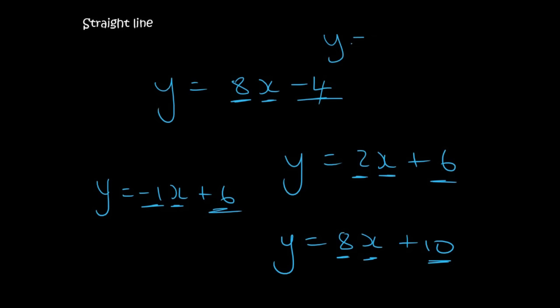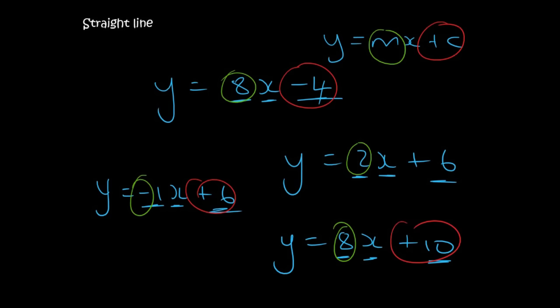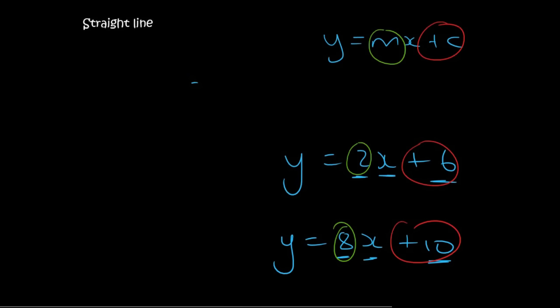So as long as it has a y equals to mx plus c, where m can be any number, and then c is the number that comes afterwards. Or it's the number that doesn't have x. So the number that goes with x, that's always m, and the other one is c.